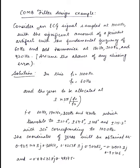Again we're considering an ECG signal, and it is assumed that the signal is sampled at 1000 Hz and it has a significant amount of periodic artifact with the fundamental frequency of 60 Hz and it has some odd harmonics.